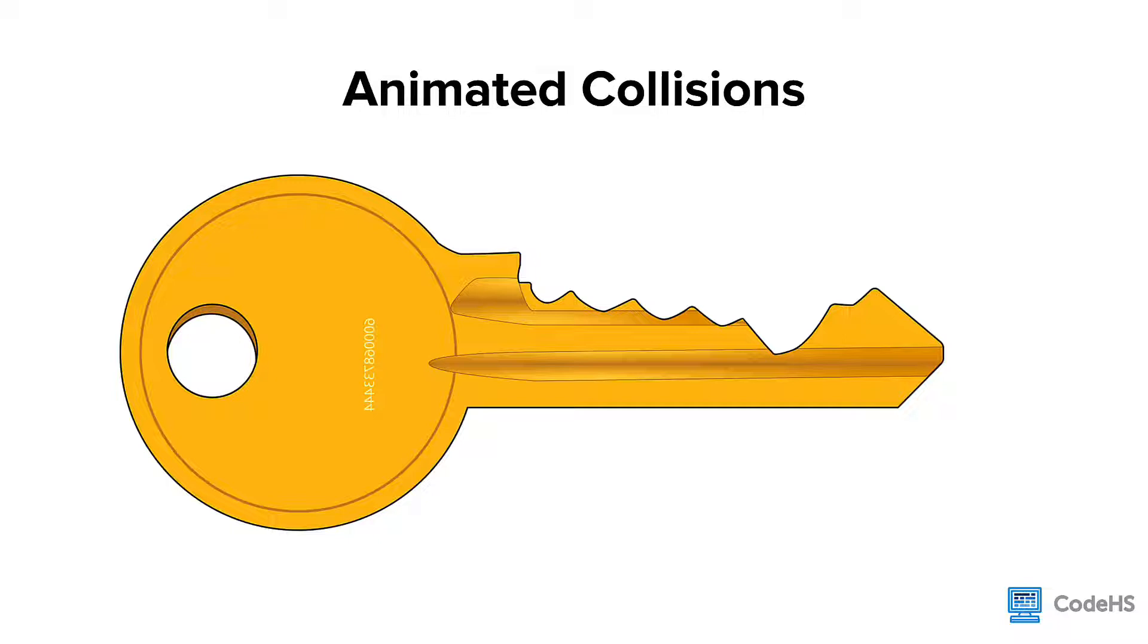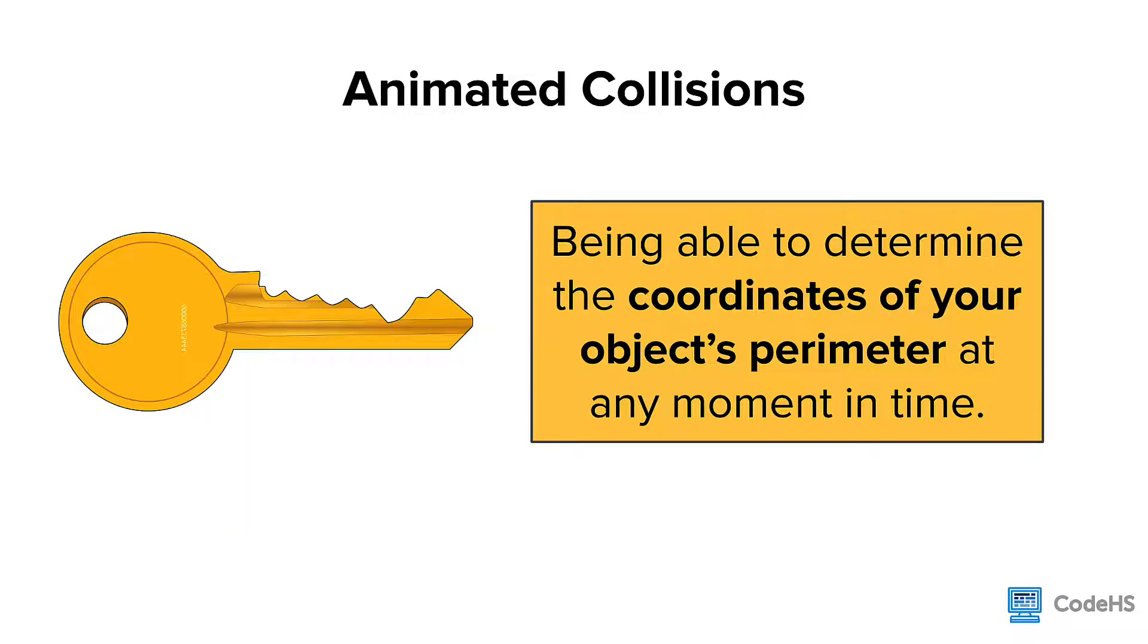Implementing collisions in your animations can boil down to one key point: being able to determine the coordinates of your object's perimeter at any moment in time.